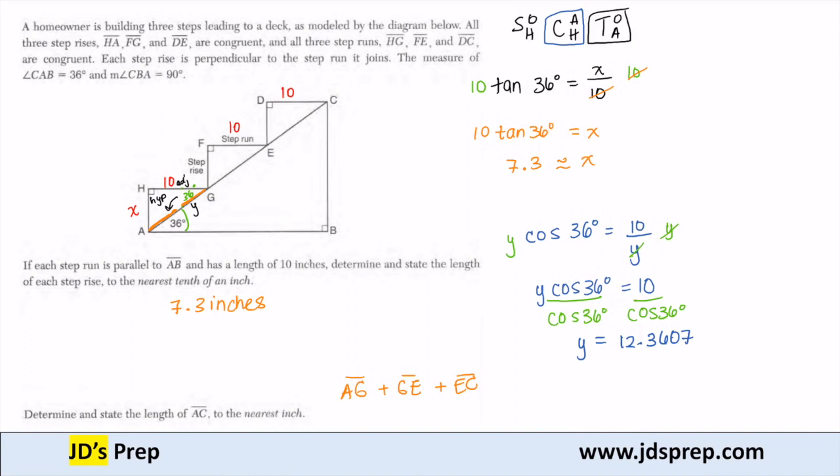But keep in mind that's only Y, which is AG. And we said that AG, GE, and EC are all equivalent.